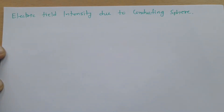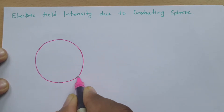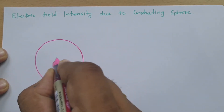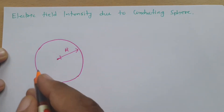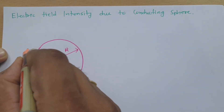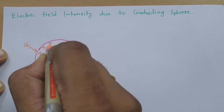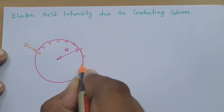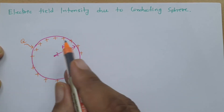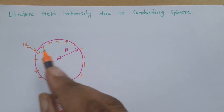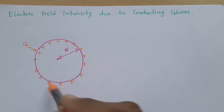Let us first draw one conducting sphere. We have one conducting sphere here with radius capital R. On this conducting sphere, we will be depositing charge Q, and let us consider this charge Q is positive. I have deposited positive charge on this conducting sphere. This is a hollow conducting sphere — remember this. This charge will get distributed over it as a surface charge density.